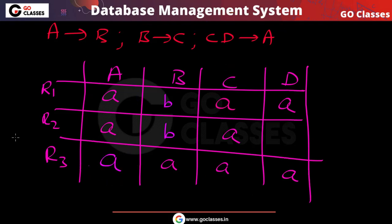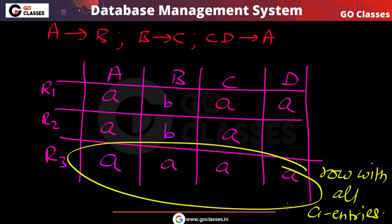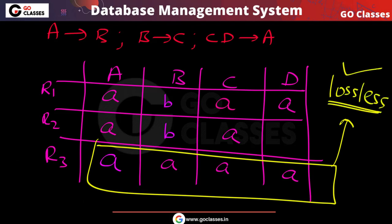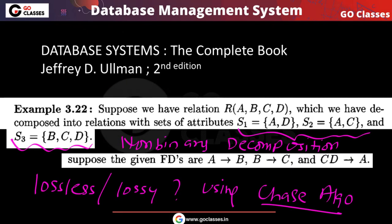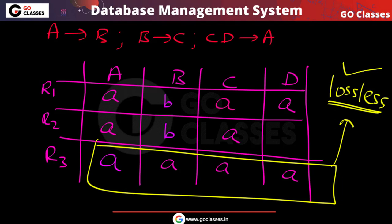We can now stop because we have obtained a row with all 'a' entries — a row with all distinguished values. Because of this row, we can conclude that this decomposition is lossless. Using the Chase algorithm, this question is solved very simply. You could also try the successive combination method, but the Chase algorithm is the best and most time-efficient method.